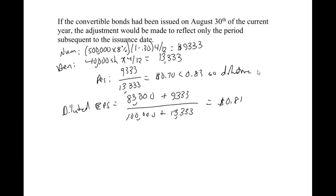Remember, diluted earnings per share is hypothetical — we didn't actually convert these bonds. We're asking: what would the effect on earnings per share be if everything were converted or exercised? That's the whole point of diluted EPS. In the next video we'll switch gears and talk about convertible preferred stock and how that affects diluted earnings per share. Please like the video and subscribe to the channel — see you next time!